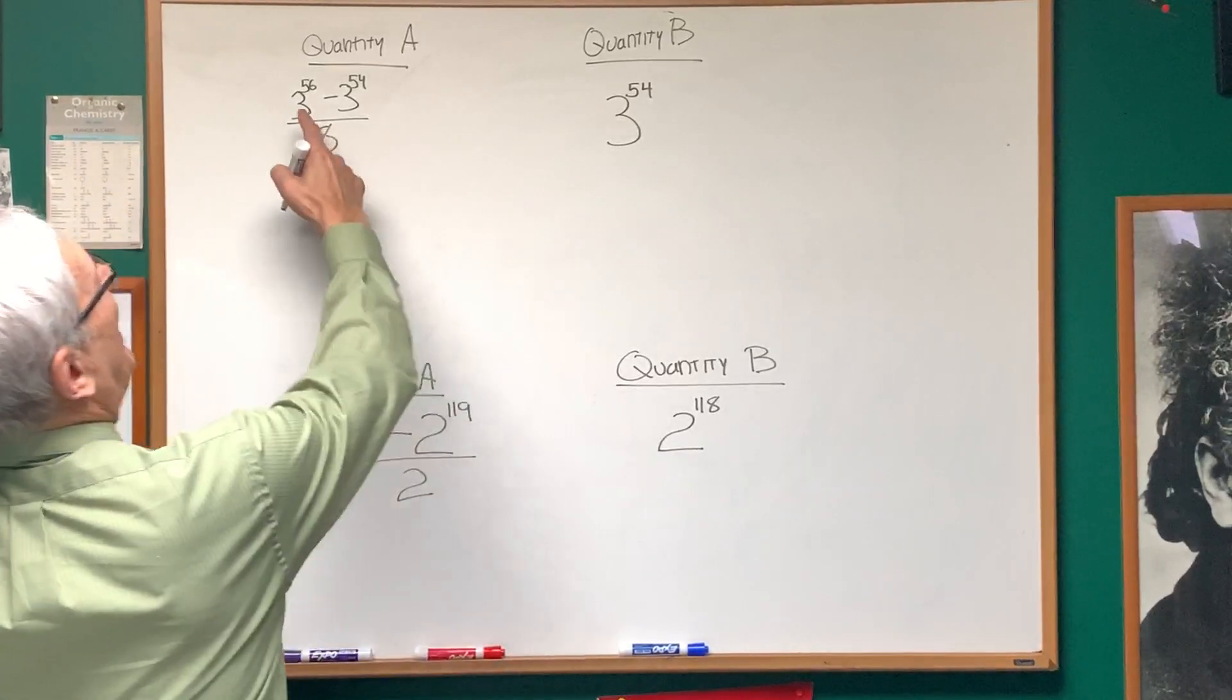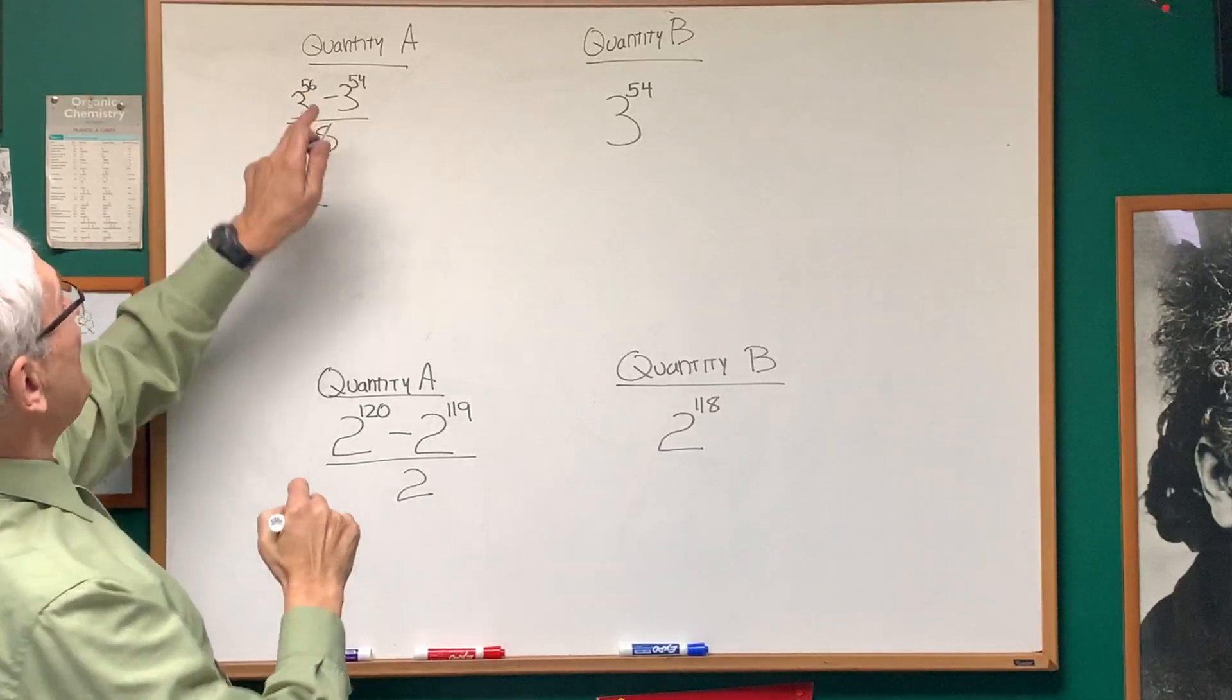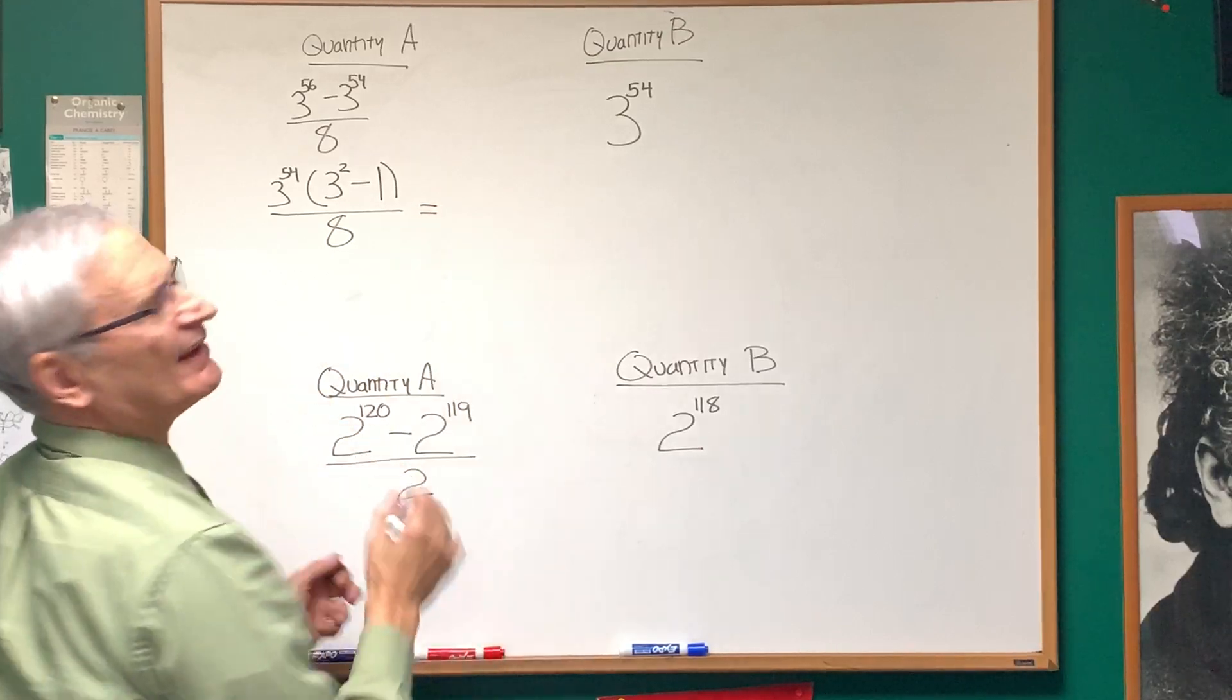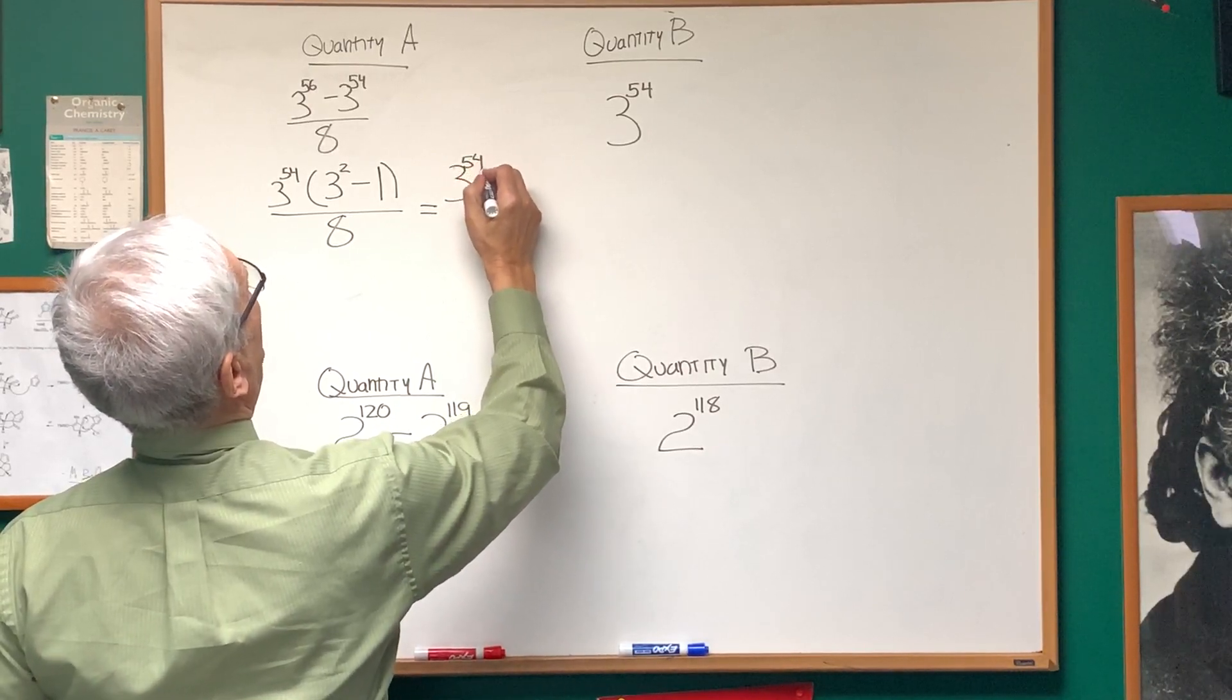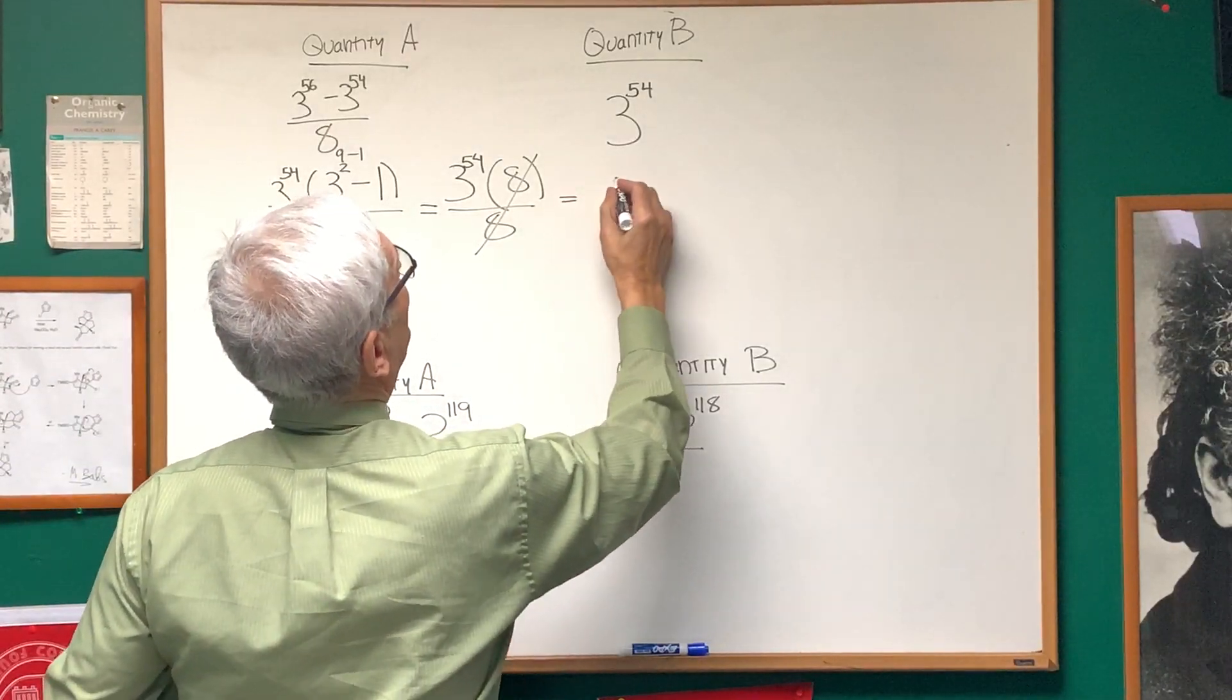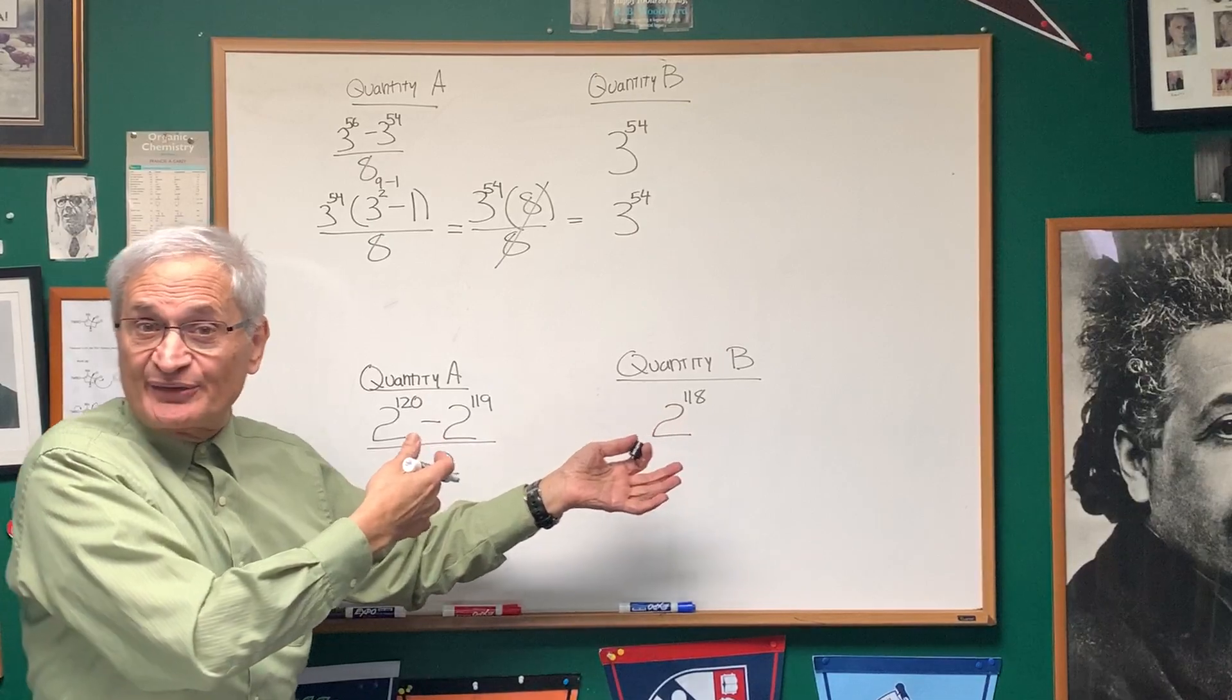We're going to take the numerator here and factor out the highest power of 3 we can possibly factor out, which would be 3 to the 54th power. If we factor 54 powers of 3 out of 3 to the 56th, we get 3 squared. If we factor 3 to the 54th out of 3 to the 54th, we get 1, and that's over 8. Let's simplify this. Because 3 squared is 9, so 3 to the 54th power times 9 minus 1, which is 8, and that cancels out with the 8 in the denominator. What are we left with? 3 to the 54th power. So, the two quantities are equal. All you have to do is know how to factor out powers of 3 from the expression.